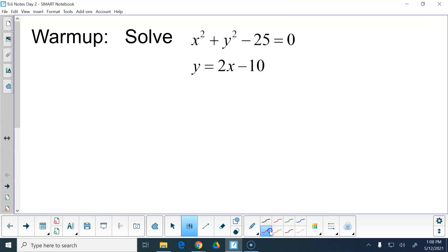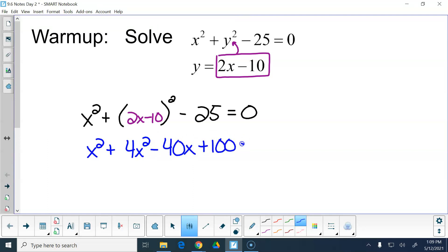The nice thing is that this particular one is pre-solved for one variable for us. So we just have to stick it up into the other equation. So then that would become x squared plus 2x minus 10 quantity squared minus 25 equals 0.